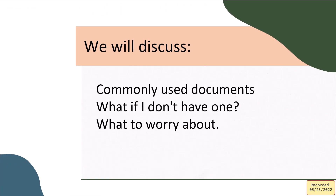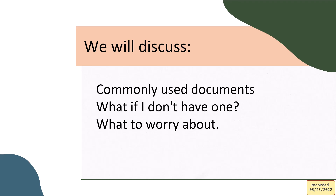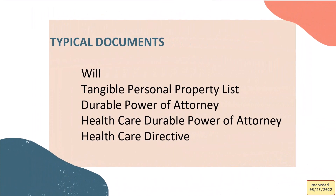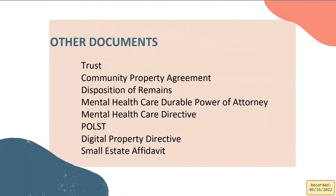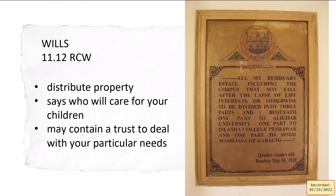Your typical estate plan will have: a will, a tangible personal property list, a durable power of attorney for general finances, a healthcare power of attorney, and a healthcare directive. Some other documents include trusts, community property agreements, and disposition of remains. I can talk more about those if anyone has questions. A will essentially distributes your property and names who will take care of your kids — wills often also include a trust to deal with a specific situation.